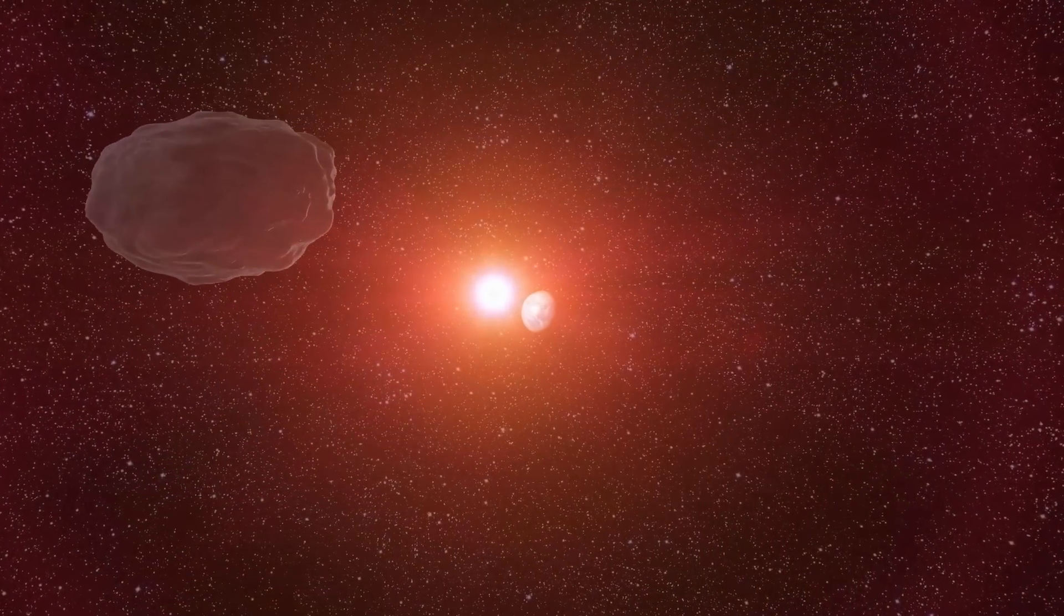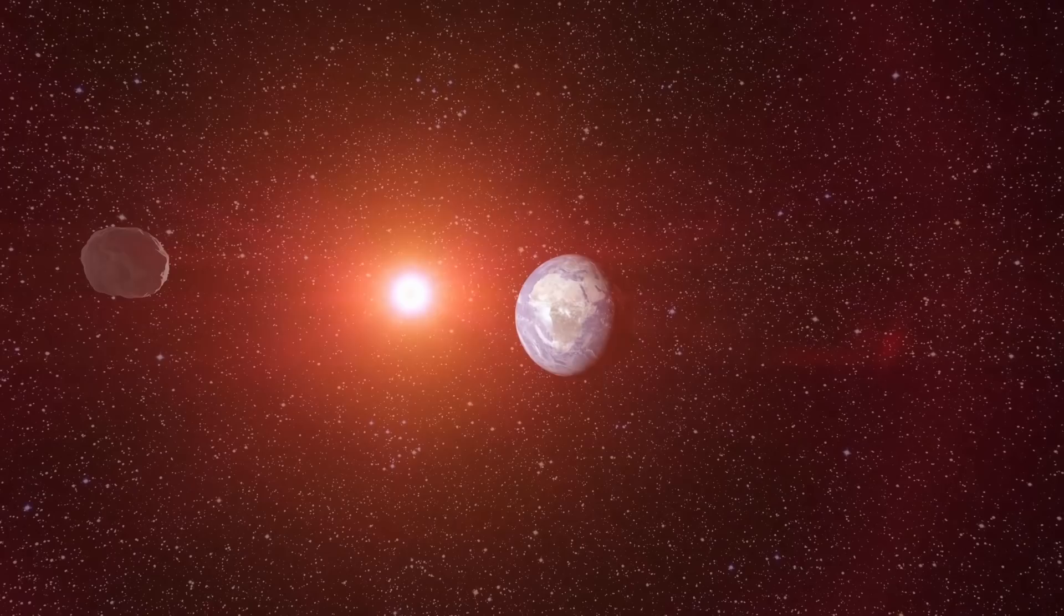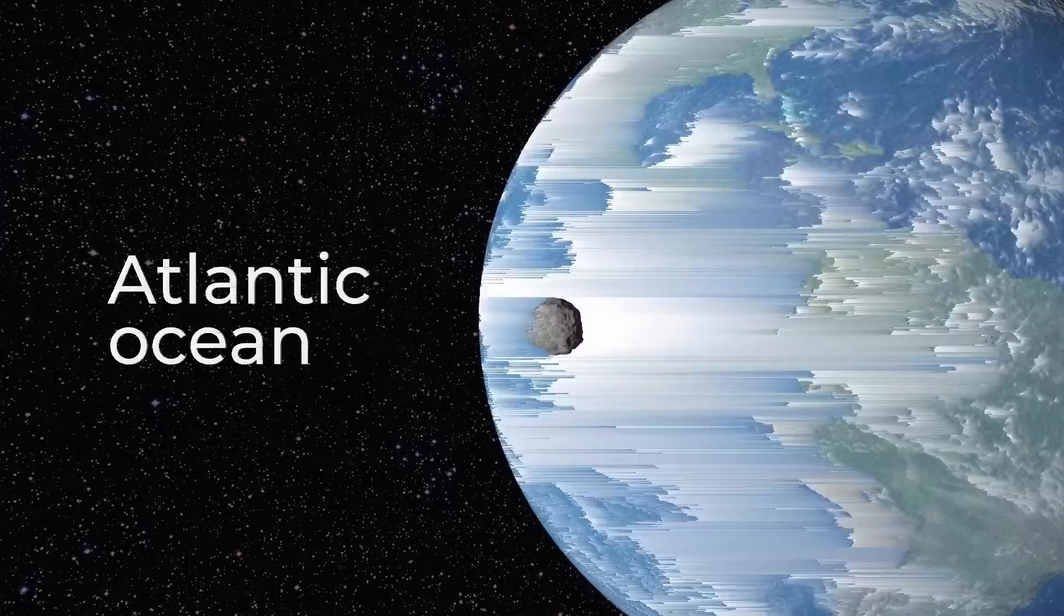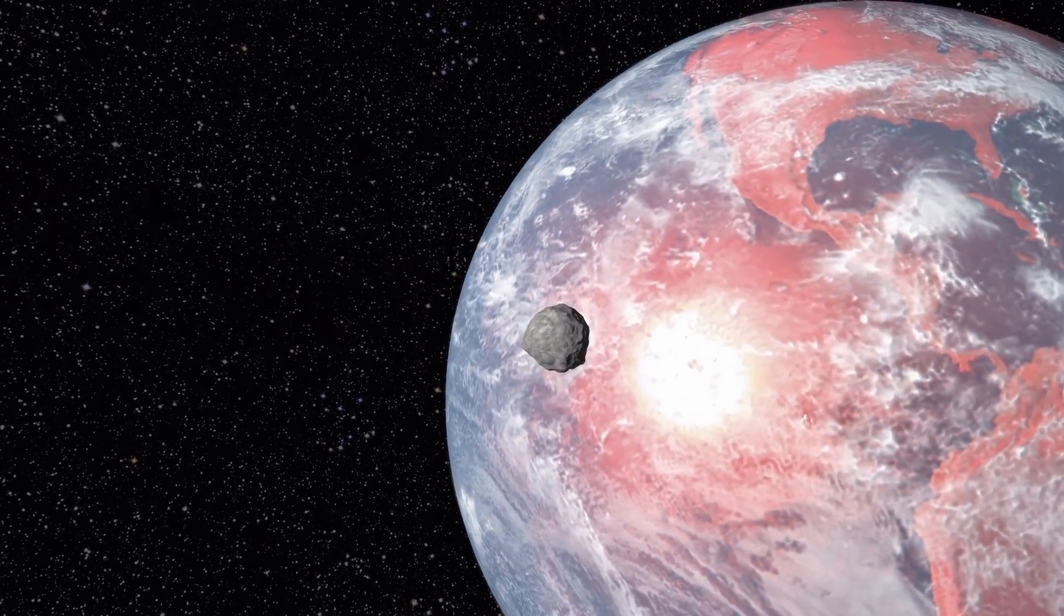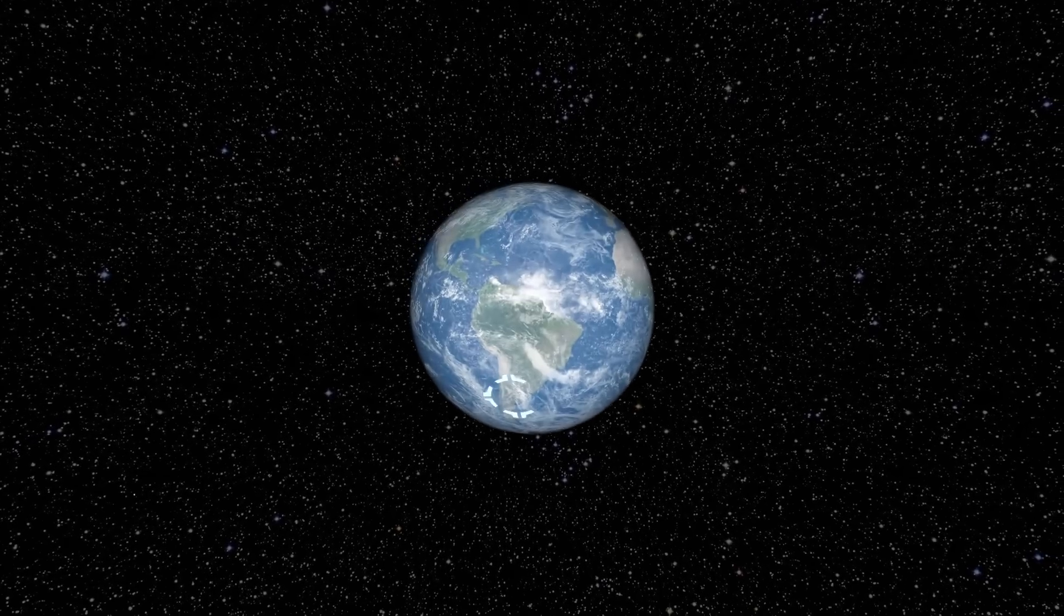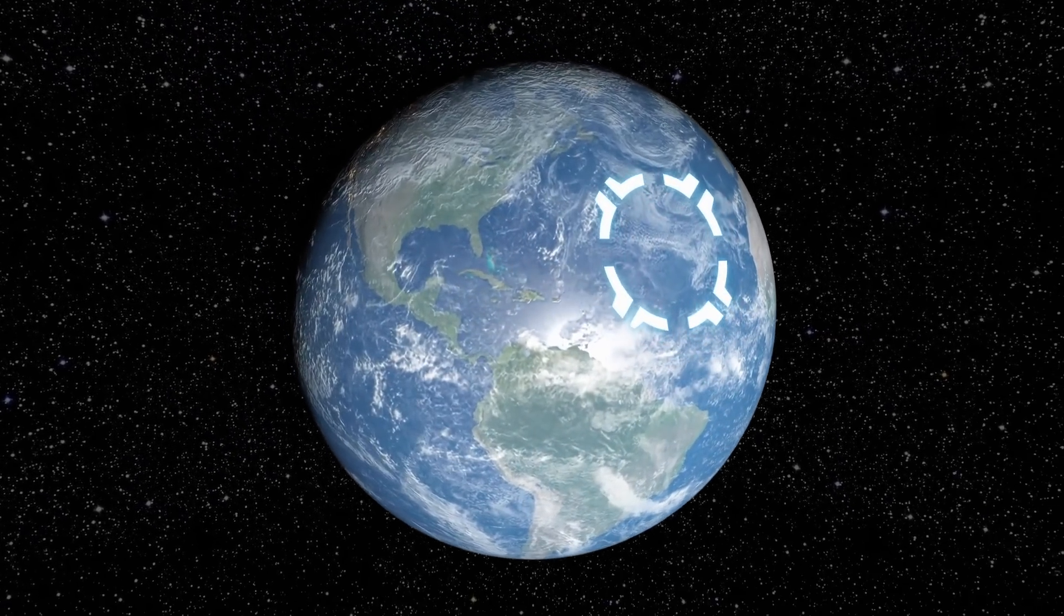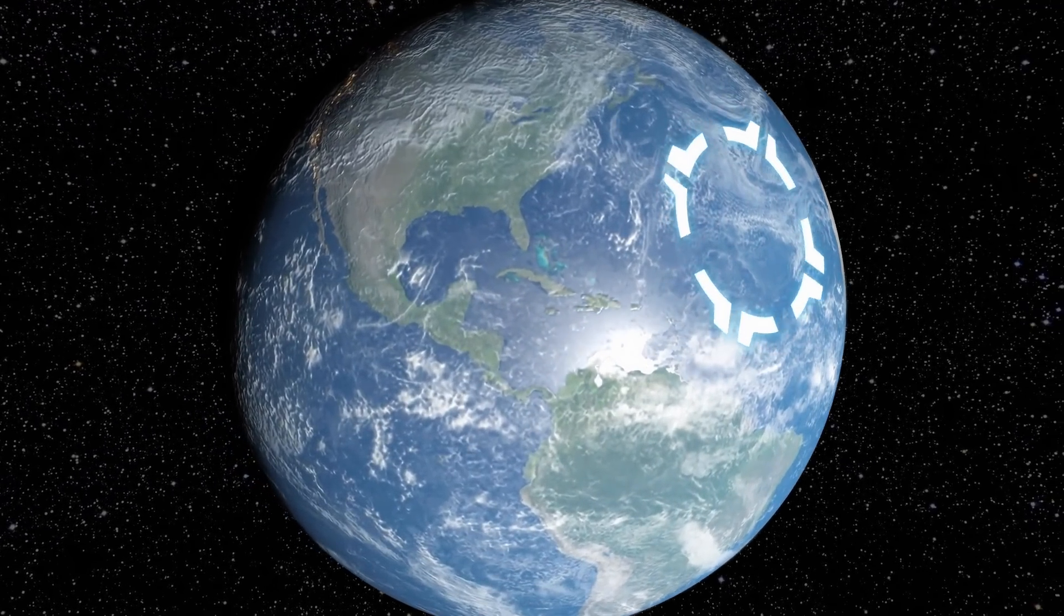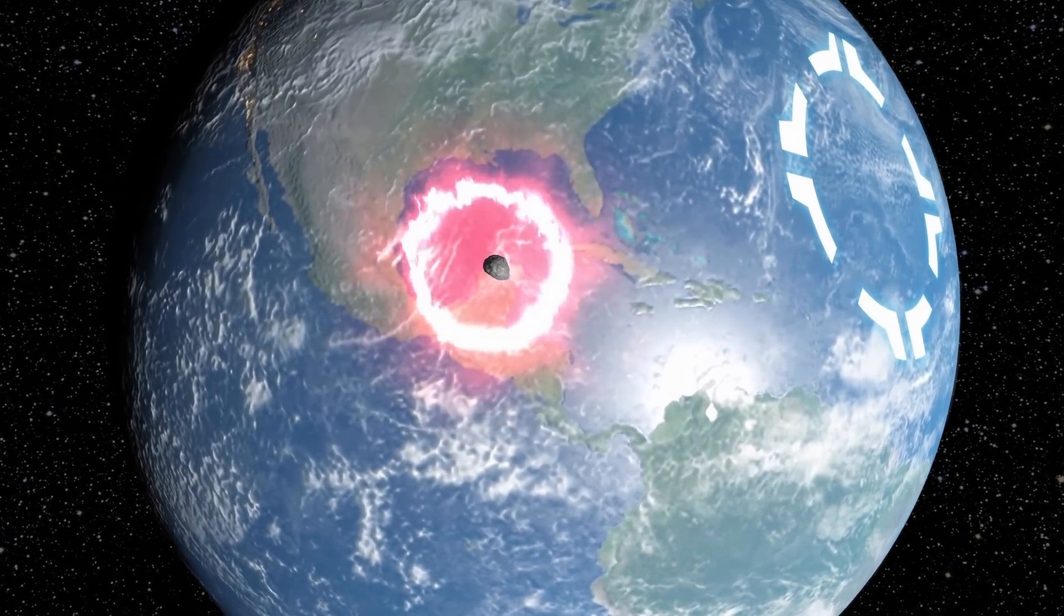If the asteroid that destroyed the dinosaurs had fallen just 30 seconds later or earlier, it would have landed in the Atlantic or Pacific Ocean. And then history would have taken a completely different path. The deep water part could have theoretically softened the blow of the Chicxulub, which in reality fell in shallow water. And the consequences would not have been so devastating.